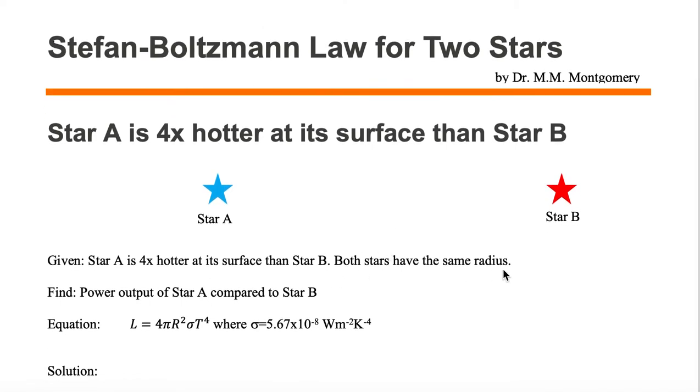Both stars have the same radius as shown. One star is blue and the other star is red. The blue star is four times hotter at its surface than the red star.